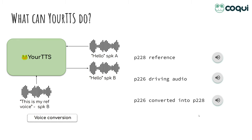One last thing that Your TTS can do, thanks to its VITS-based architecture, is voice conversion. For that task, we only use the last part of the model. We feed a driving audio for the content and a reference audio for the speaker identity, and we get out the driving audio converted with the speaker identity of the reference.